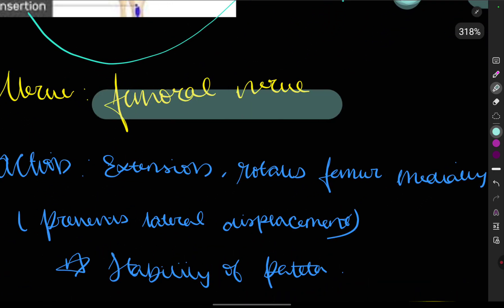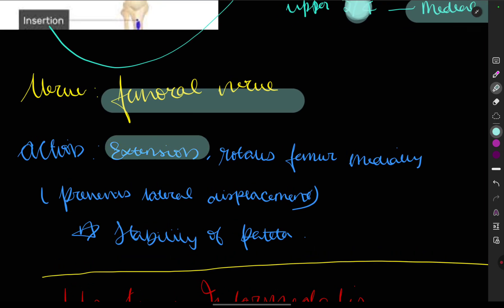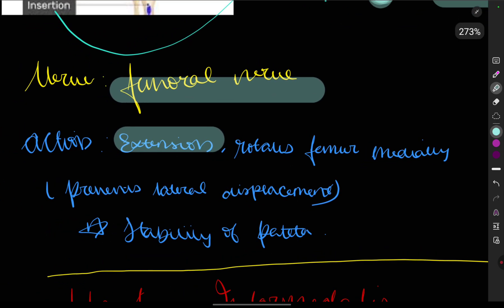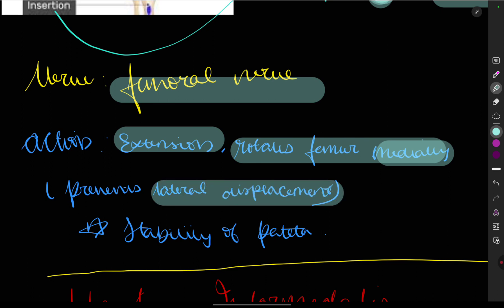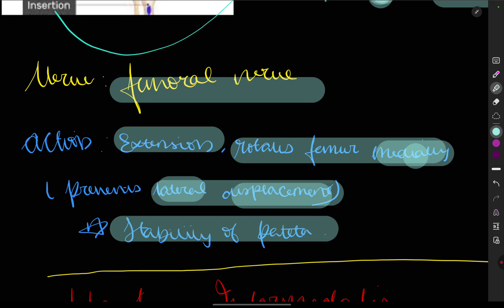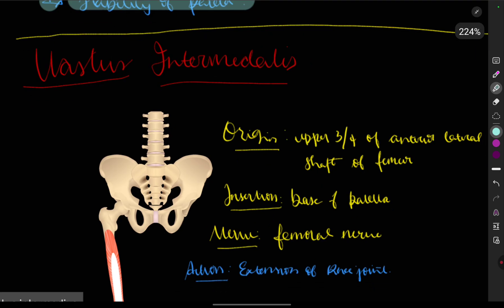Nerve supply is the femoral nerve. The action of vastus medialis is extension of the knee, medial rotation of the femur, and preventing lateral displacement. Importantly, the vastus medialis provides stability to the patella — remember which muscle stabilizes the patella: it is the vastus medialis.